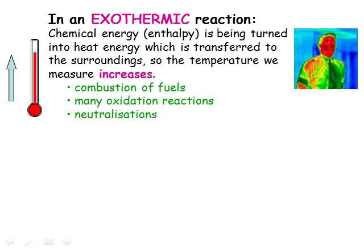We know by observation that many reactions are exothermic. They release heat energy, and we would see a temperature increase during the reaction if we measured the temperature. This heat energy has to come from somewhere. In an exothermic reaction, the chemical energy, or enthalpy, is being transformed into heat energy, so that at the end of the reaction the products have less enthalpy and more heat energy. Reactions that do this include oxidations such as burning fuels, and neutralisations.